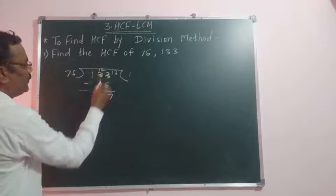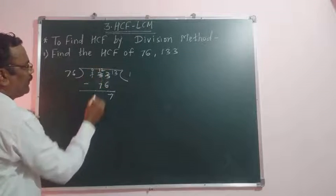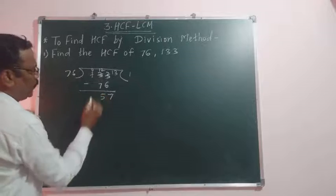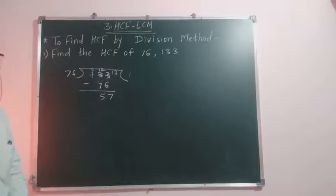Here we get 2, 12, here 0. 12 minus 7, that is 5. Remainder is 57. Now divide 76 by 57.